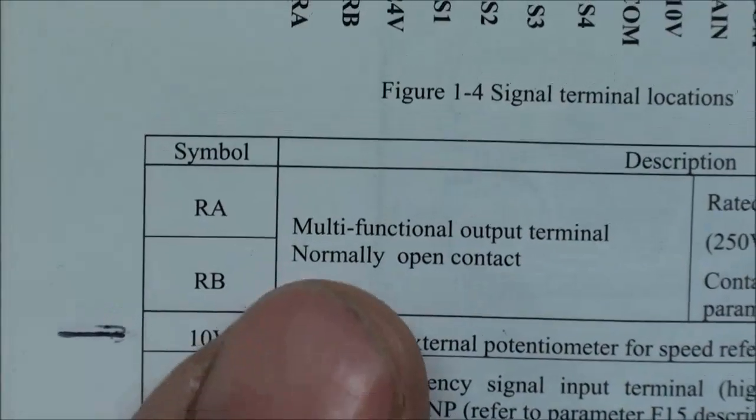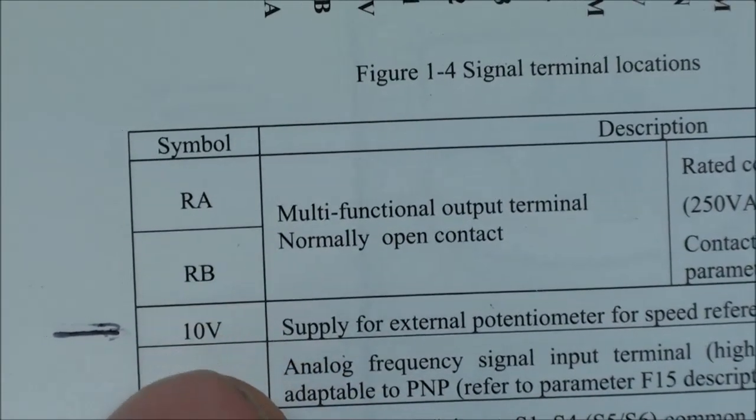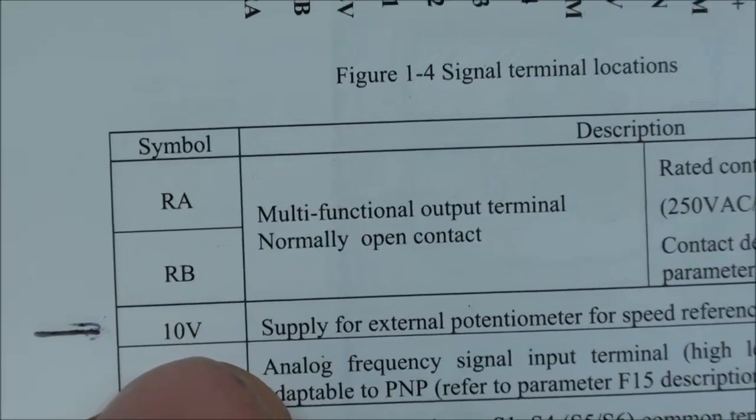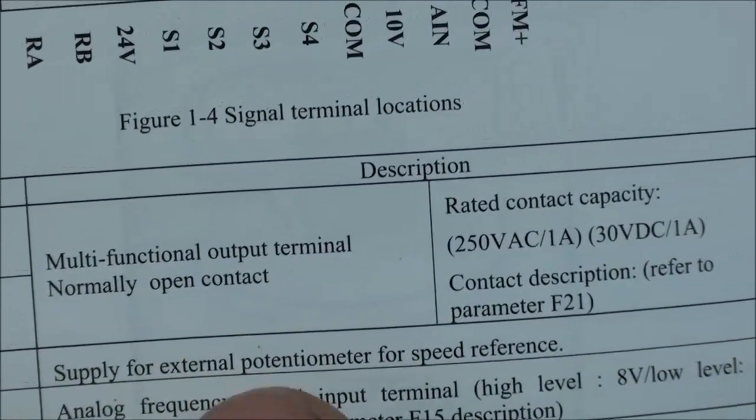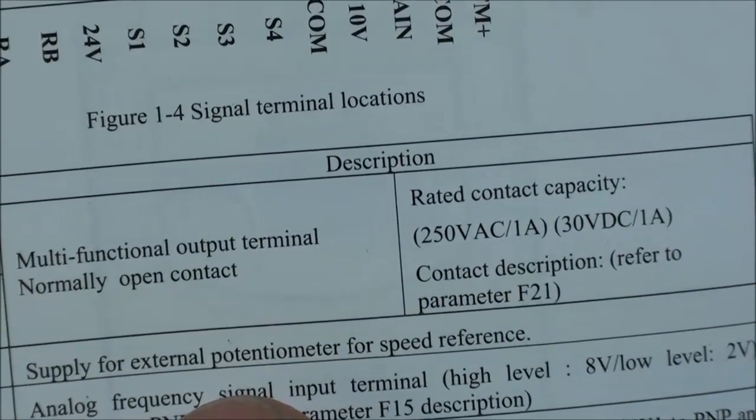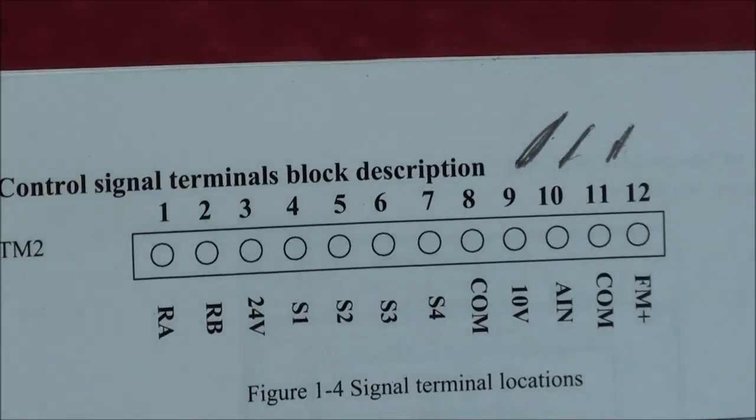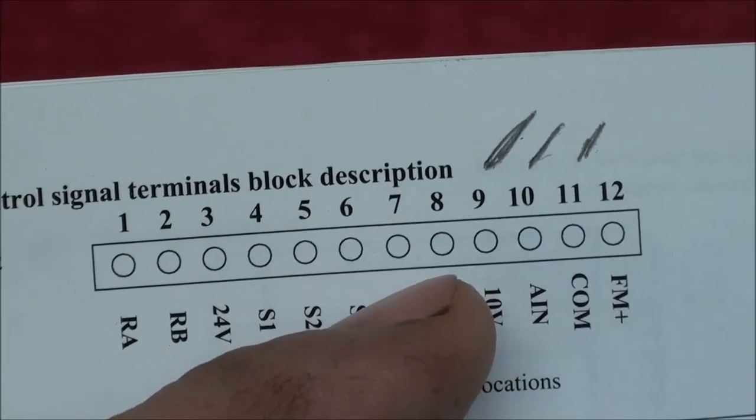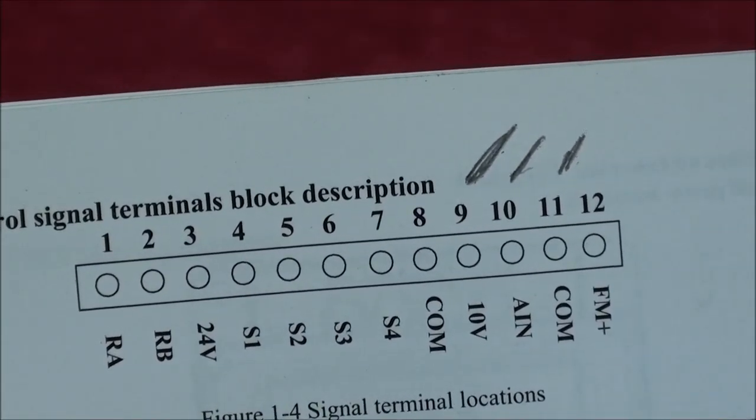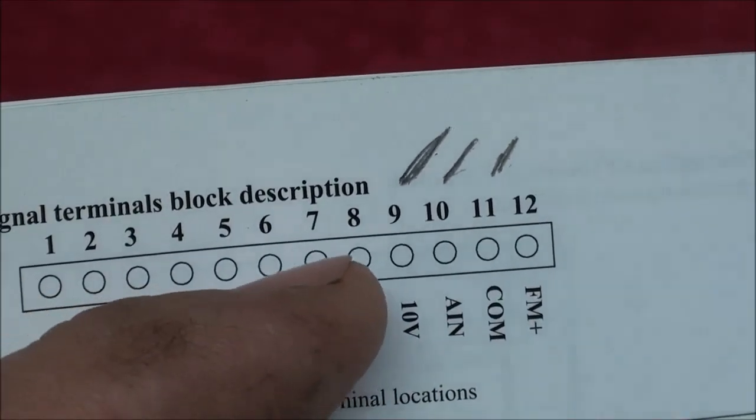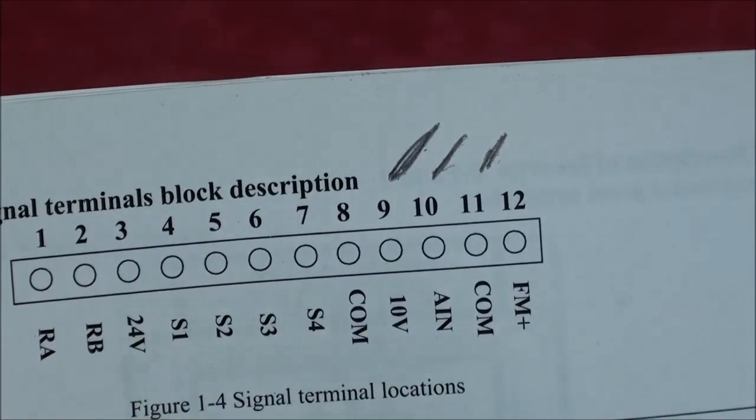But here it tells that the terminal 10V is the supply for the external potentiometer for speed reference, and on the top here that's the terminal block that is on the bottom of the VFD, and I'm going to use terminals 9, 10, and 11.